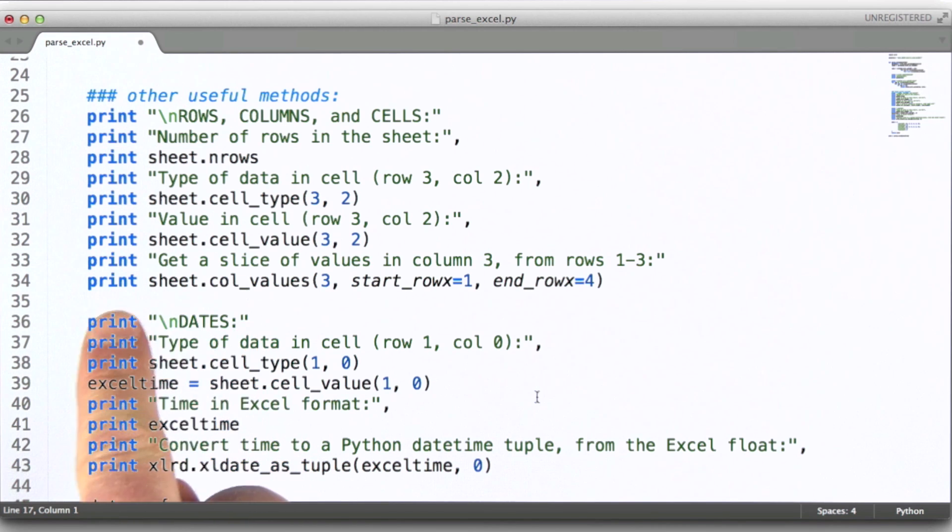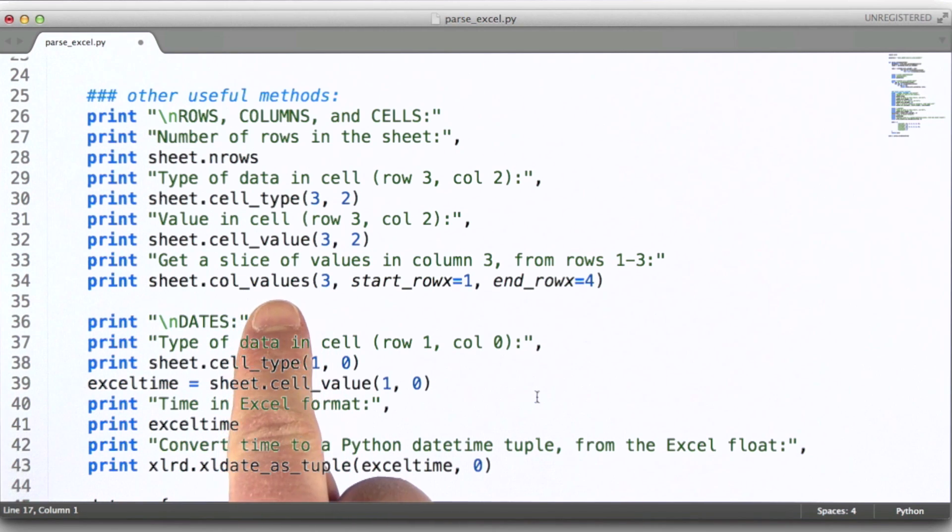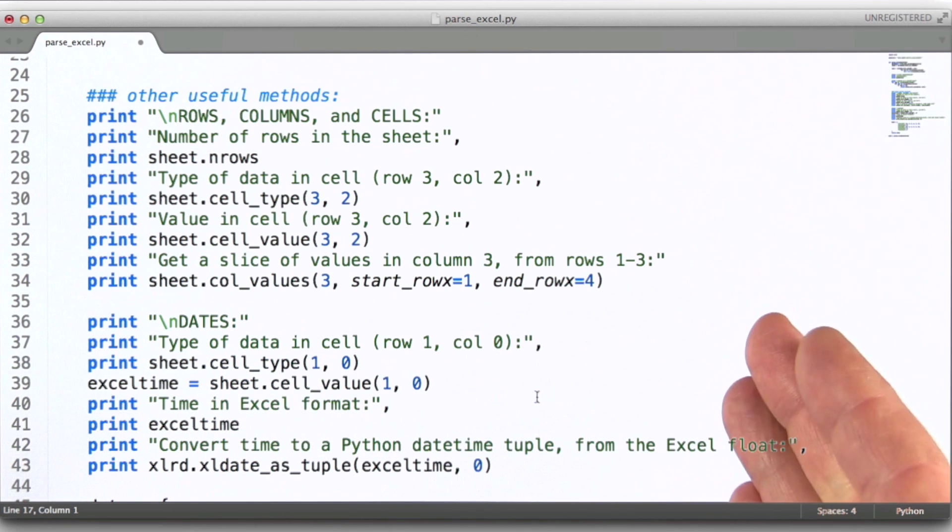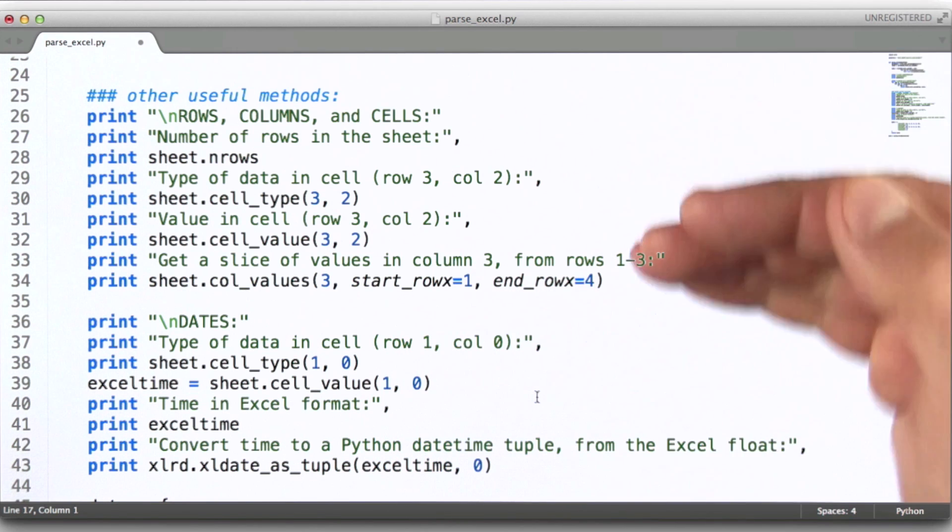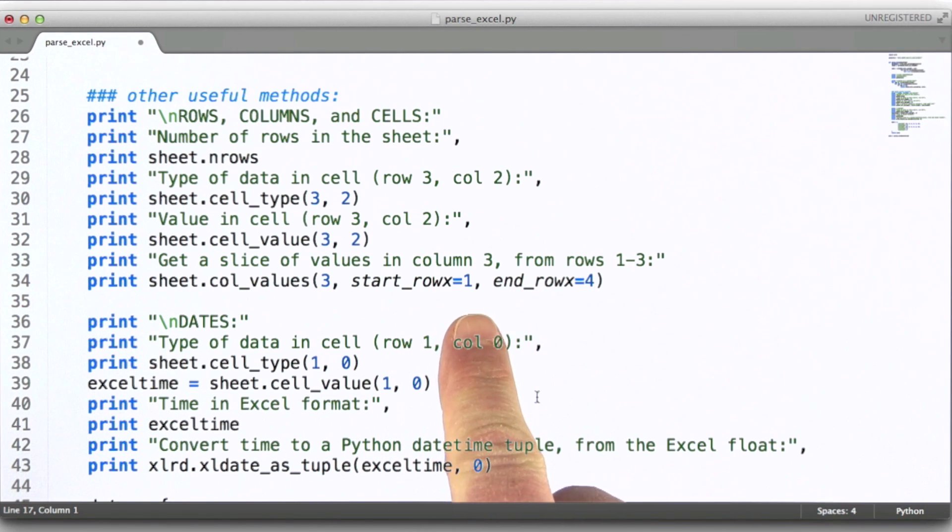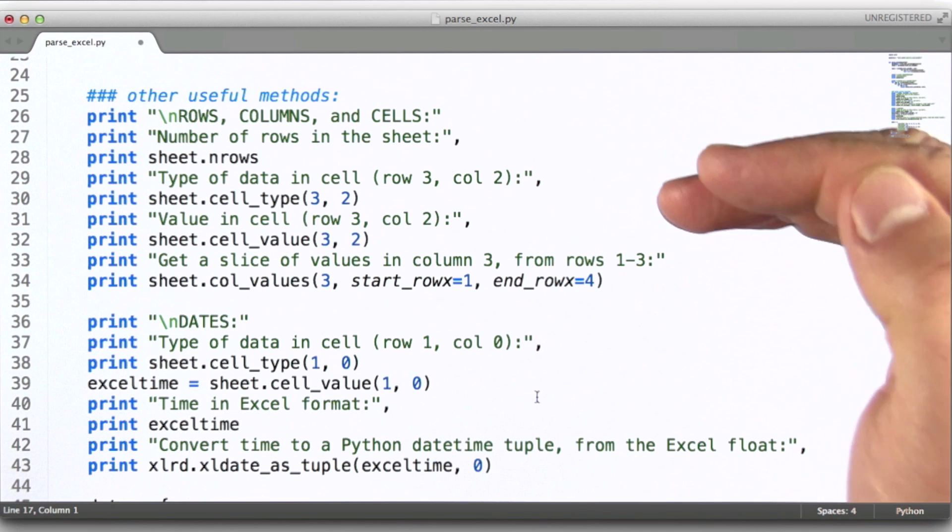And then finally, this is actually a pretty cool method. Here, we can slice the values out of a particular column. What that means is that we can say, I want three values from this particular column, and I want to start on row one, so actually the second row down, and I want to go through rows one, two,